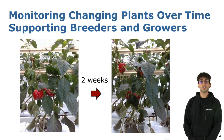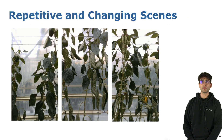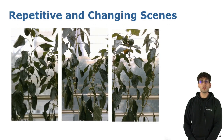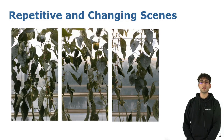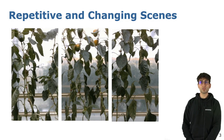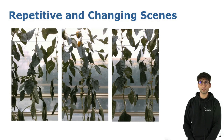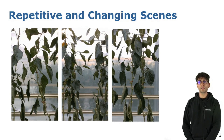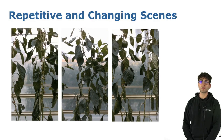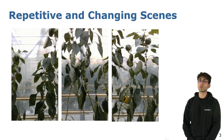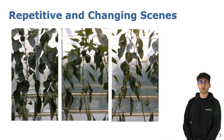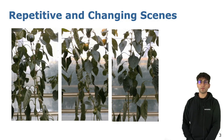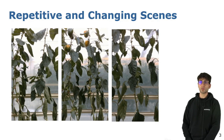For this, data associations between individual parts of the plant need to be estimated. Computing correct data associations is one of the most challenging problems in mapping and SLAM. Unfortunately, data associations for plants is even more challenging, due to highly repetitive scenes and the fact that they undergo continuous changes. Distinguishing which part of the plant we are observing, and keeping track of them in different sequences, is a hard task.